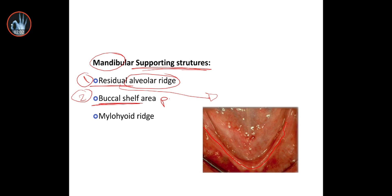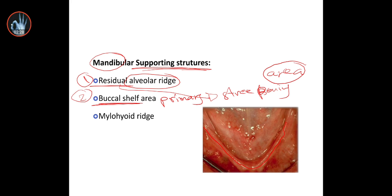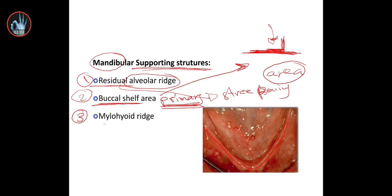The buccal shelf is considered as a primary stress bearing area. The primary stress bearing area is the area where the occlusal force is applied vertically, or at the right angle to the area. This is the alveolar process, also called the buccal shelf. The occlusal force comes at a right angle to this area — that is what makes it the primary stress bearing area. The third structure is the mylohyoid ridge.